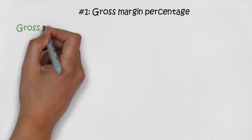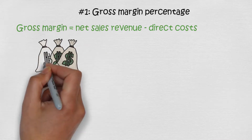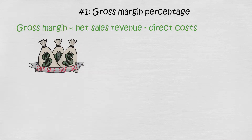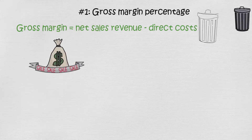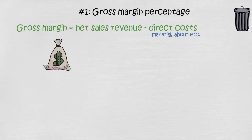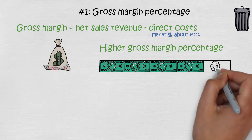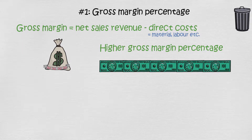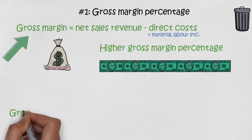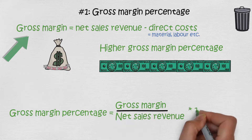Gross margin is a company's net sales revenue minus the cost of goods sold. This shows the amount of sales revenue that the company keeps after the direct costs associated with the product have been removed. Direct costs means things like material and labor needed to produce the product. The higher the gross margin percentage, the more the company keeps on each dollar of sales. Gross margin percentage is calculated by dividing the gross margin by net sales revenue and multiplying by 100.